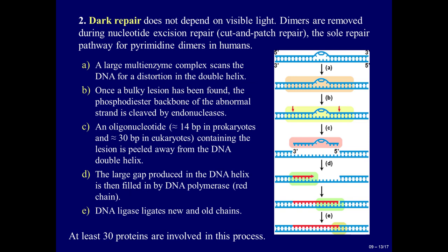The second type of repair is dark repair, which does not depend on visible light. Dimers are removed during nucleotide excision repair, or cut-and-patch repair, which is the sole repair pathway for pyrimidine dimers in humans. We can distinguish five stages. Stage A: a large multi-enzyme complex scans the DNA for a distortion in the double helix. Stage B: once a bulky lesion has been found, the phosphodiester backbone of the abnormal strand is cleaved by endonucleases. Stage C: an oligonucleotide — approximately 14 base pairs in prokaryotes and 30 base pairs in eukaryotes — containing the lesion is peeled away from the DNA double helix.